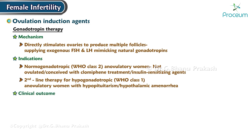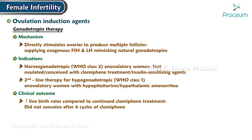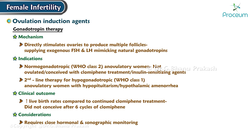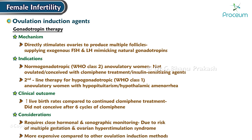Clinical outcome: Gonadotropin therapy leads to increased live birth rates compared to continued clomiphene treatment in patients who did not conceive after six cycles of clomiphene. Considerations: Gonadotropin therapy requires close hormonal and sonographic monitoring due to the risk of multiple gestation and ovarian hyperstimulation syndrome. Also, it's more expensive compared to other ovulation induction methods.